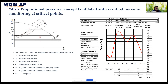In a constant pressure system, all set points are constant. But in our proportional pressure concept, only the minimum residual set pressure remains constant. Based on demand, the pump ramps up and ramps down speed according to requirement.